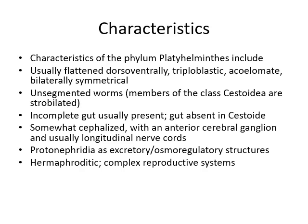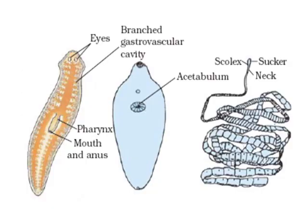Proto-nephridia serve as excretory and osmoregulatory structures. Platyhelminthes are hermaphroditic, having both male and female sex. The three representative organisms are planarians from Turbellaria, liver flukes from Trematoda, and tapeworms from Cestoidea. The liver fluke has acetabulum, and the tapeworm has a scolex.